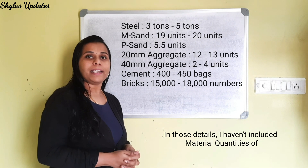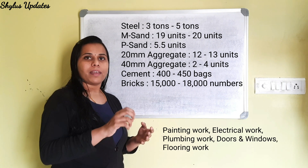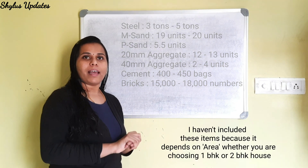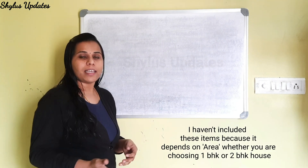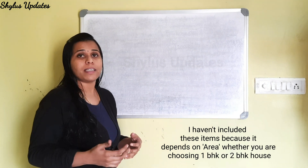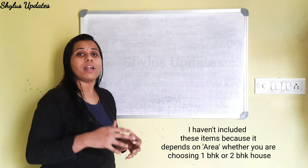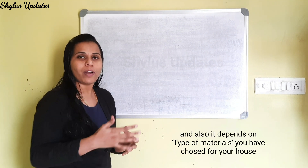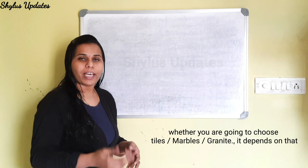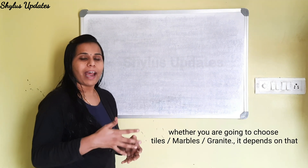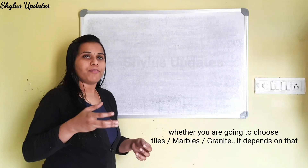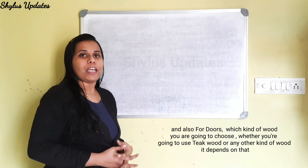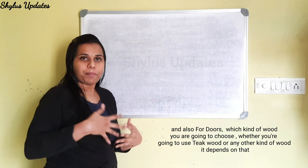I have not included the material quantities of painting work, electrical work, plumbing work, doors and windows, and flooring work. These items are not included because it depends on the area and whether you are choosing a 1 BHK or 2 BHK house. It also depends on the type of material you choose — whether tiles, marble, or granite for flooring, and which kind of wood you use for doors, whether teak wood or any other kind.